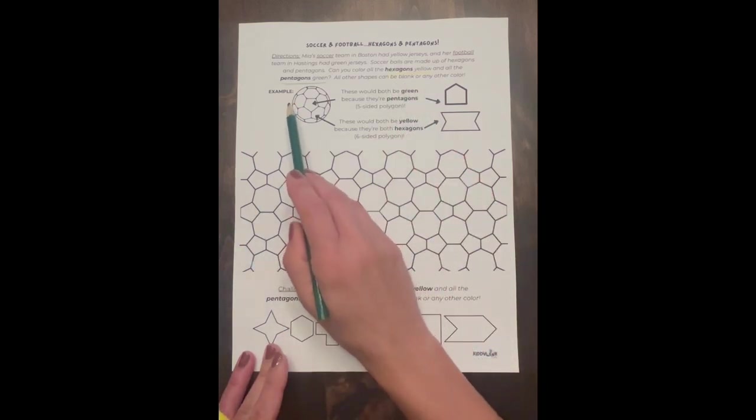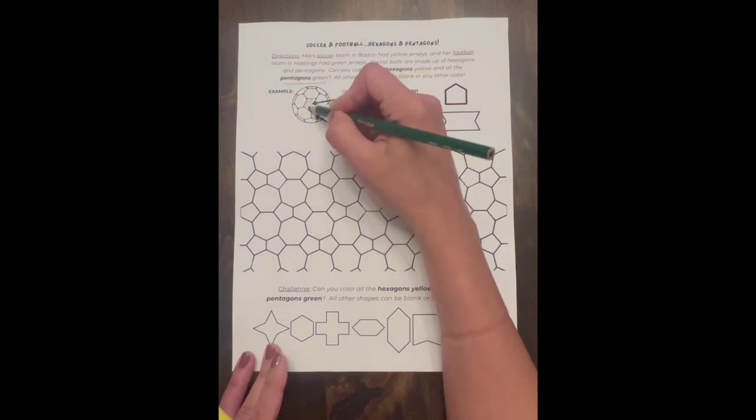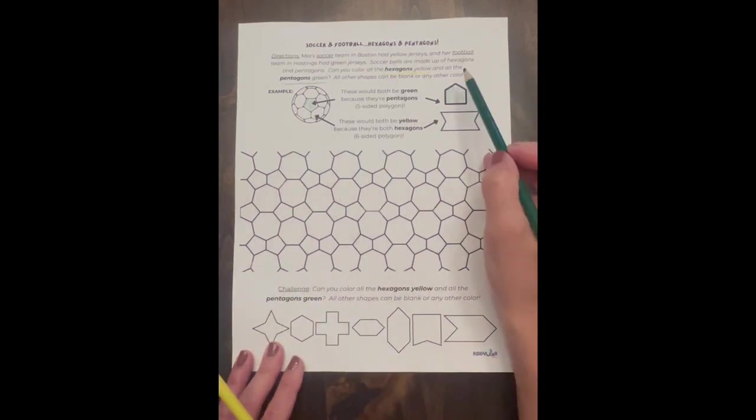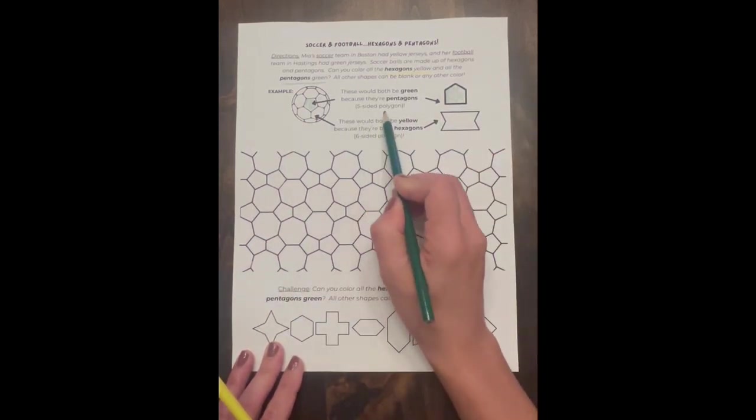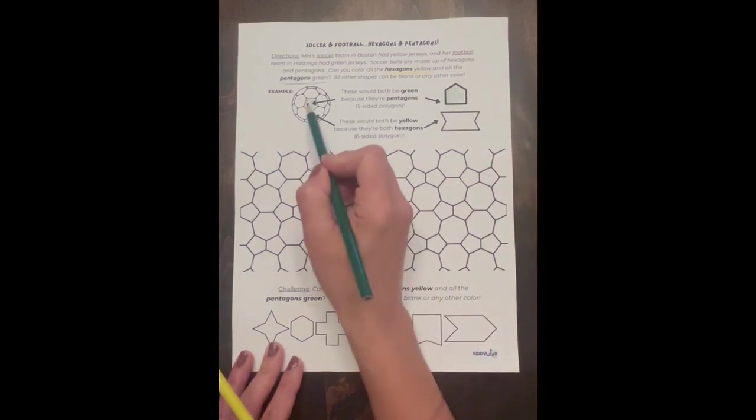Okay, and then here's an example. They're showing that this one right here would be green because that's a pentagon, and then this one would also be green. What makes it a pentagon is because it's a five-sided polygon. One, two, three, four, five. Let's check this one. One, two, three, four, five.